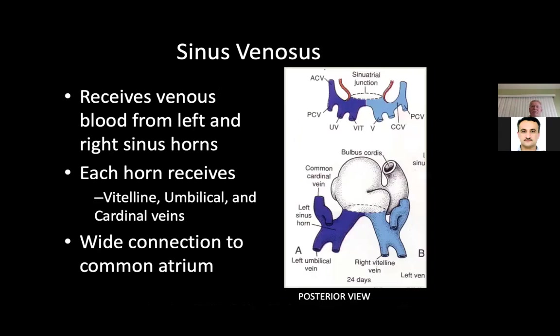It all joins the atrium through the sinoatrial foramen — that's why part of the right atrium is made up by the sinus venosus, not just the primitive atrium. The sinus venosus receives venous blood from the left and right sinus horns, including the vitelline veins, umbilical veins, posterior cardinal veins, and anterior cardinal veins, all coming together with the bulbus cordis.